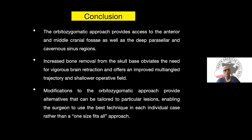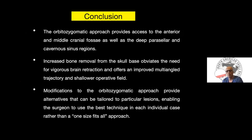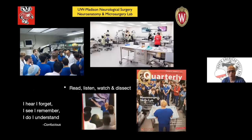In conclusion, the orbitosygomatic approach provides access to the anterior and middle cranial fossa as well as deep paracellular and cavernous sinus regions. Increased bone removal obviates the need for vigorous brain retraction and offers improved multi-angle trajectory and a shallower operative field. Modifications to the orbitosygomatic approach provide alternatives that can be tailored to particular lesions, enabling the surgeon to use the best approach for each individual case rather than a one-size-fits-all strategy. To learn this approach, you need to go to the lab to perform dissections, which will give residents, fellows, and young faculty better understanding before going to the OR.